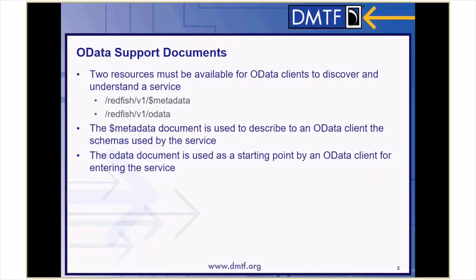There are two support documents for OData that Redfish implements. These two resources must be available for OData clients to discover and understand a service. These are defined as the Redfish v1 dollar metadata and Redfish v1 OData resources. The dollar metadata document is used to describe to an OData client the schemas used by the service. The OData document is used as a starting point by an OData client for entering the service.